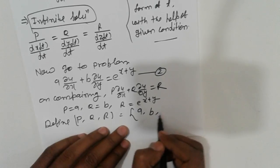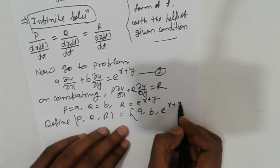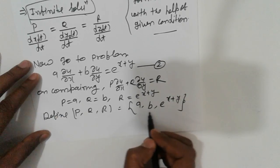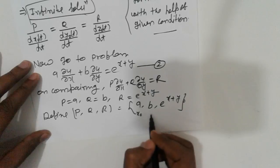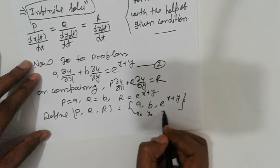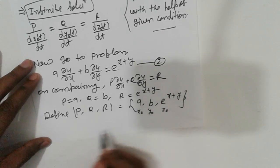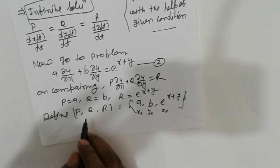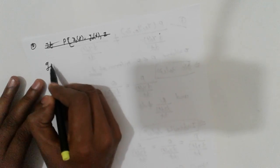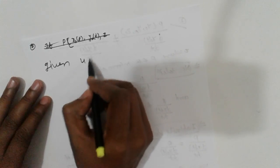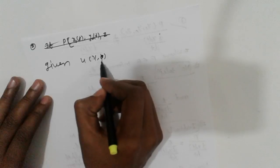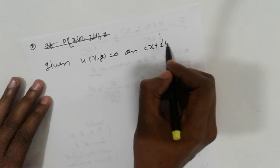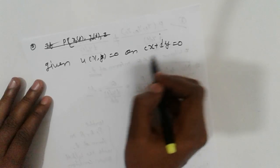And r is equal to e raised to x plus y. So p = a, q = b, r = e^(x+y). Since a and b are constants, x₀, y₀, and z₀ can be identified. The boundary condition is u(x, y) = 0 on c·x + d·y = 0.